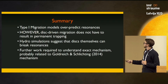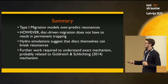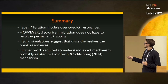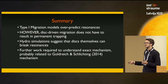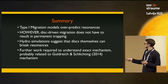In general, type 1 migration models in the past have over-predicted mean motion resonances. However, what we've seen in these simulations is that disk-driven migration does not necessarily lead to permanent trapping in mean motion resonances — more like temporary trapping. Some effects from the disk can break the resonances. We would suggest that what you actually see in Kepler multiple-planet systems is planets that stopped migrating somewhere between resonances. We need to work more to understand this, but it's probably related to the mechanism by Goldreich and Schlichting.